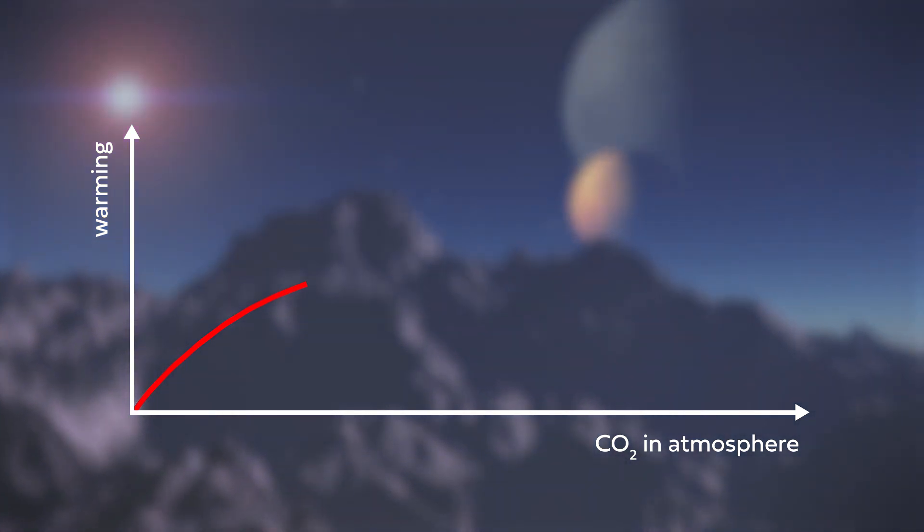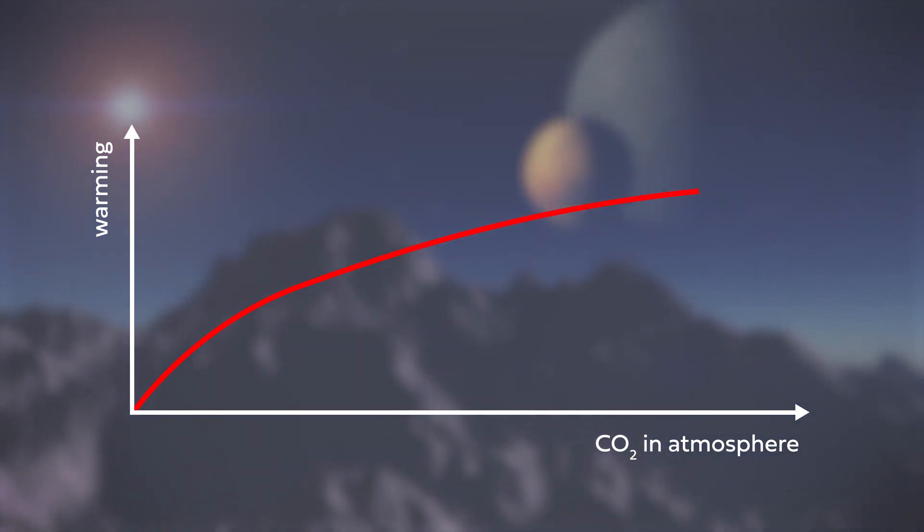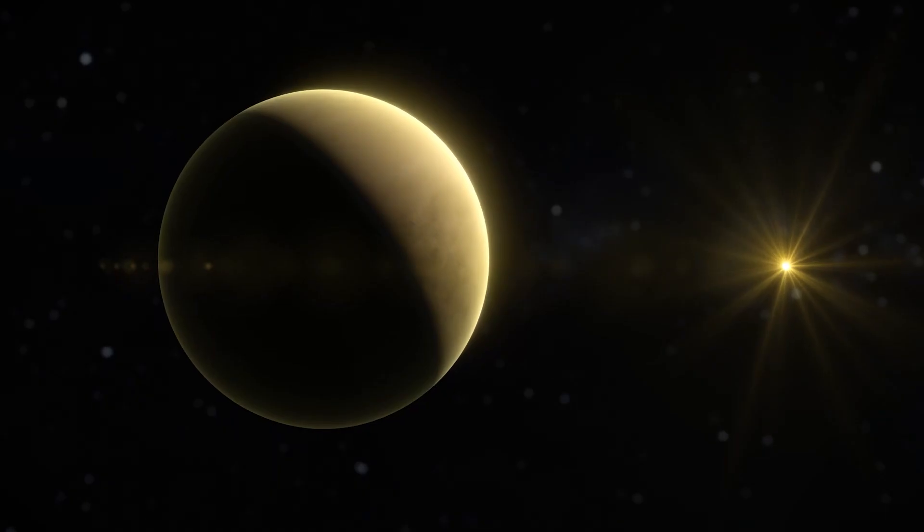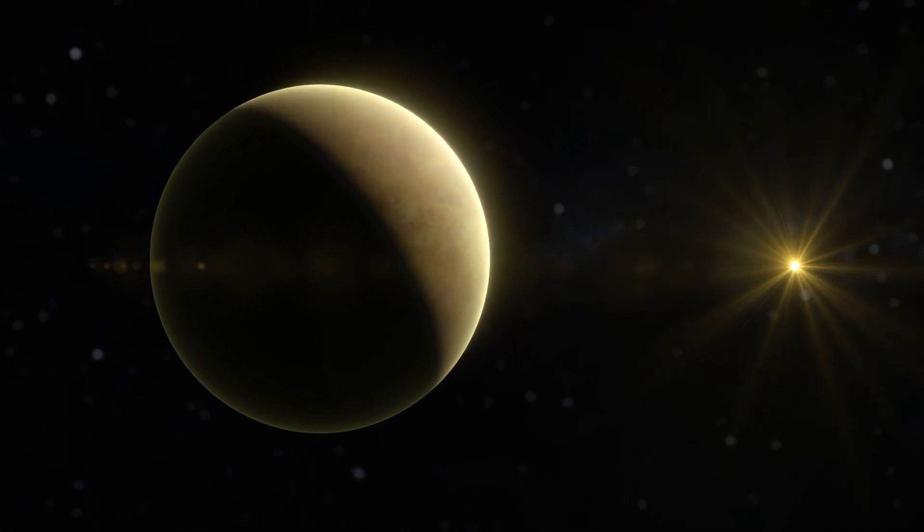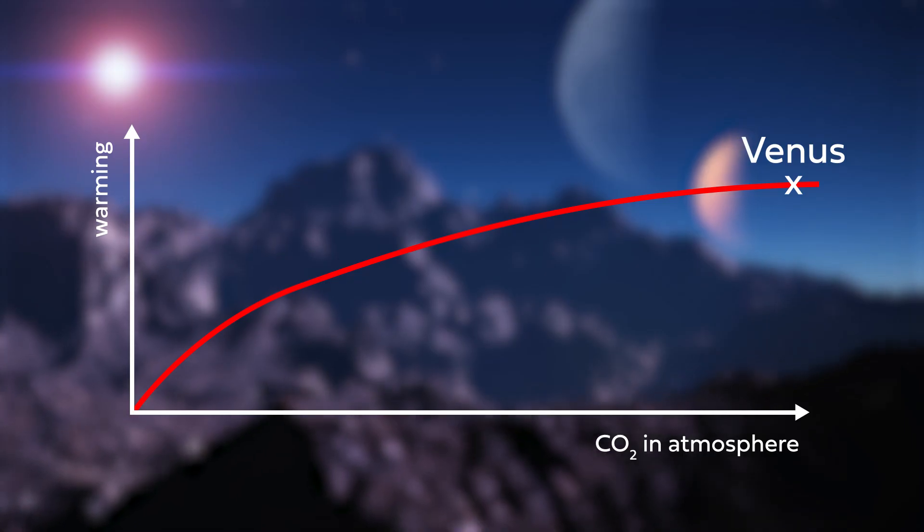So will the second. Keep adding trillions of tons of CO2, however, and each successive contribution will cause less and less warming. Venus has got so much CO2 that you could probably remove a significant fraction of its atmosphere, and its average temperature wouldn't drop by that much. It should be noted, however, that on Earth, we are very much down here towards the start of this graph.